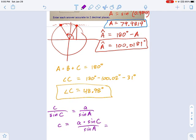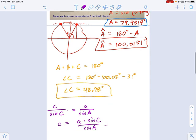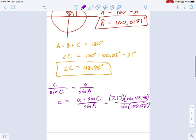We know these values. Where is little a? 7.17. So this is 7.17, that's little a, times sine of 48.98 degrees - that's big angle C. And angle A, remember we're going to use the obtuse angle, 100.02 degrees. If you punch that into your calculator, you will get C equals 5.49.